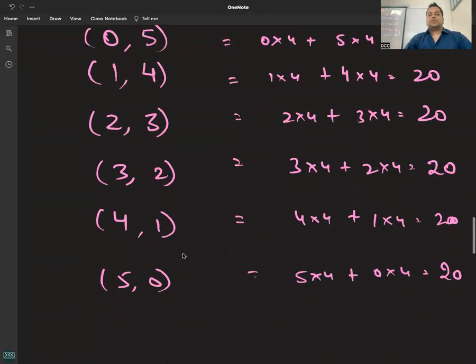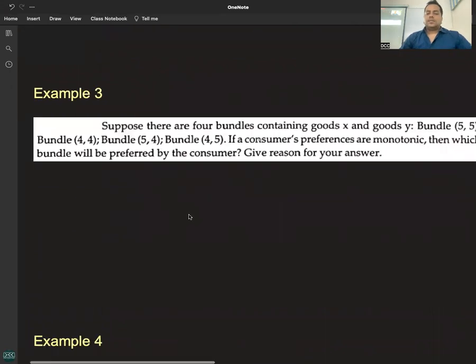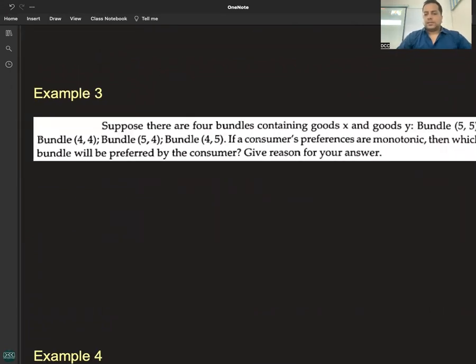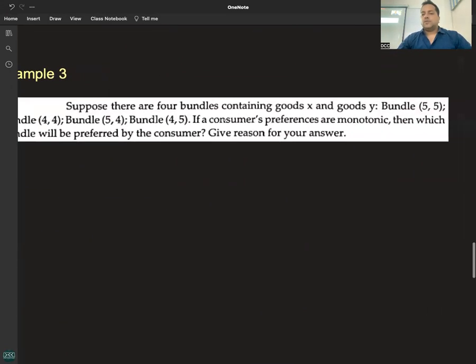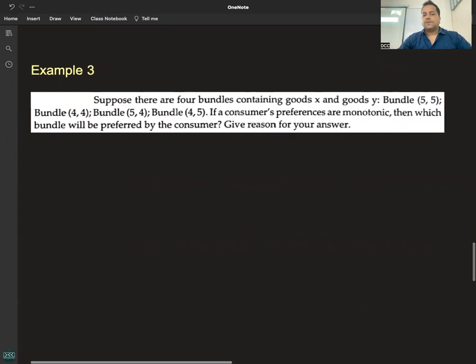I am reading example 3. Suppose there are four bundles containing goods x and good y: Bundle (5,5), Bundle (4,4), Bundle (5,4), Bundle (4,5). If